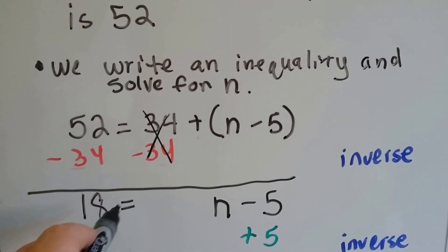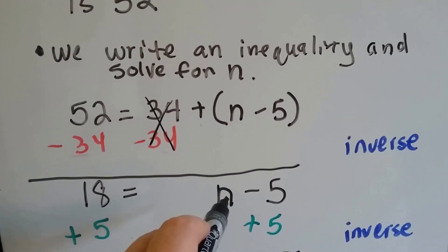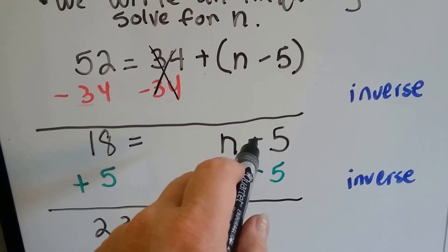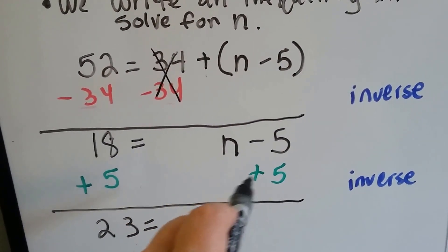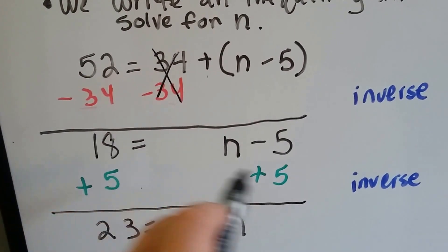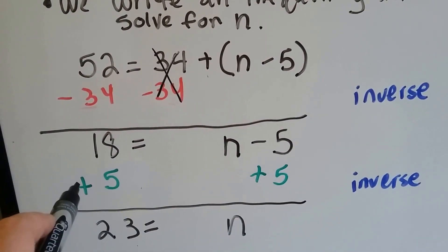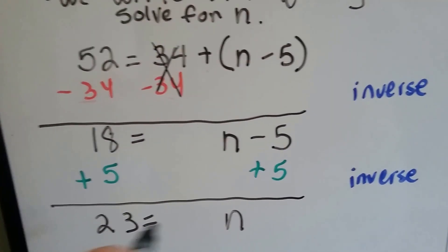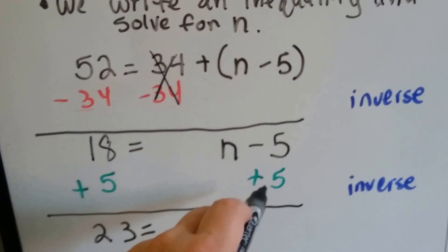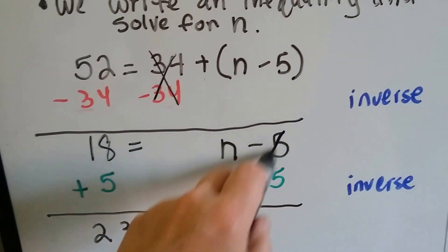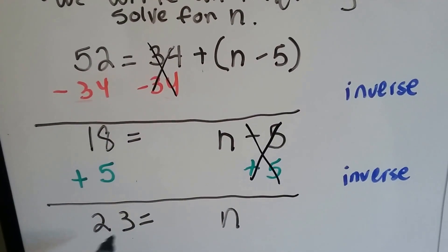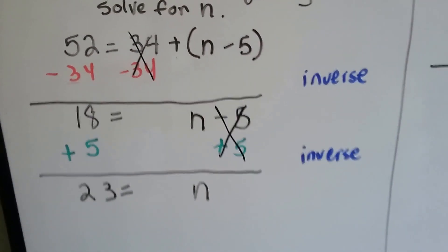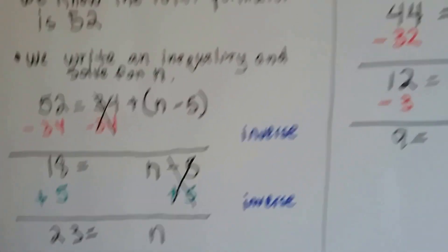Now what we've got is 18 is equal to n minus 5. The inverse operation of subtraction is addition, so we're going to add 5 to each side of the equal sign. 18 plus 5 is 23, and the plus 5 and minus 5 make zero pairs, so we've got 23 is equal to n. That's the inverse operation and making zero pairs.